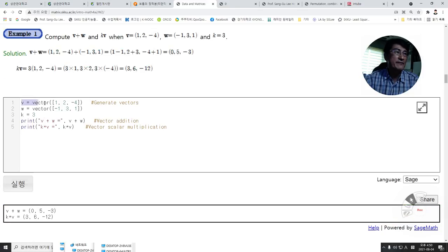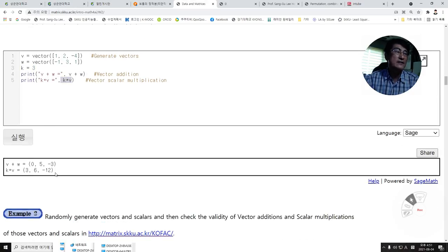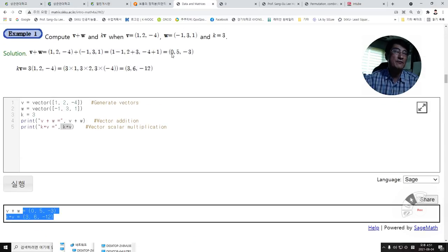Define the vectors V and W and scalar k equals 3. Then, print V plus W and print k times V gives us the same solution, the same answer that we had here.